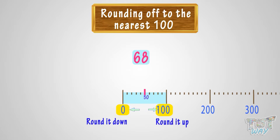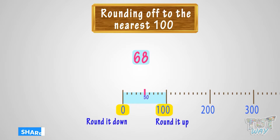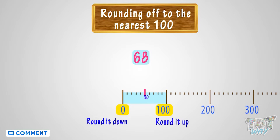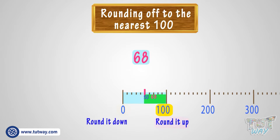Think, according to the rule, if the number comes after the 50 mark, the number is rounded up. And if the number comes before the 50 mark, the number is rounded down. So here, our number 68 is after the 50 mark, so we will round it up to 100.